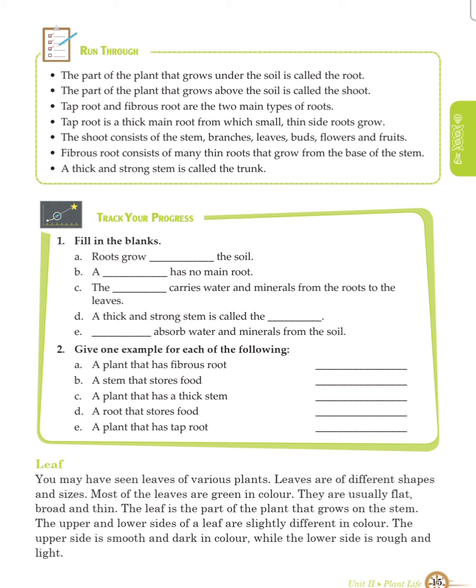Now we will see what we learned till now. Run through: the part of the plant that grows under the soil is called the root. The part of the plant that grows above the soil is called the shoot. Taproot and fibrous root are the two main types of roots. Taproot is a thick main root from which small, thin-sized roots grow.